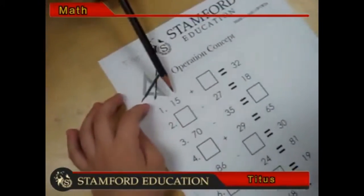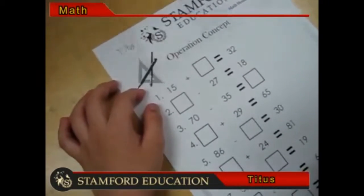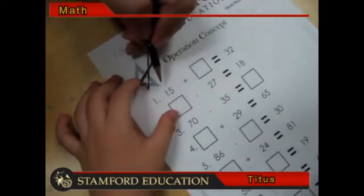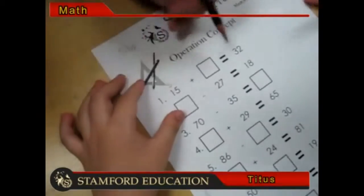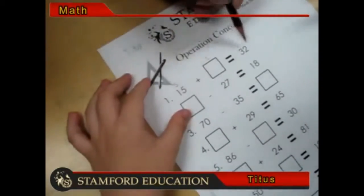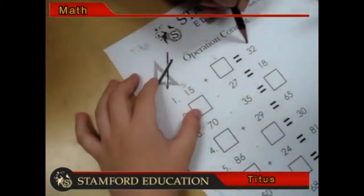Okay, how do we do this kind of question? Very simple. This is a plus or a minus. If you have plus, it will be a small number plus a small number to give you a big number.